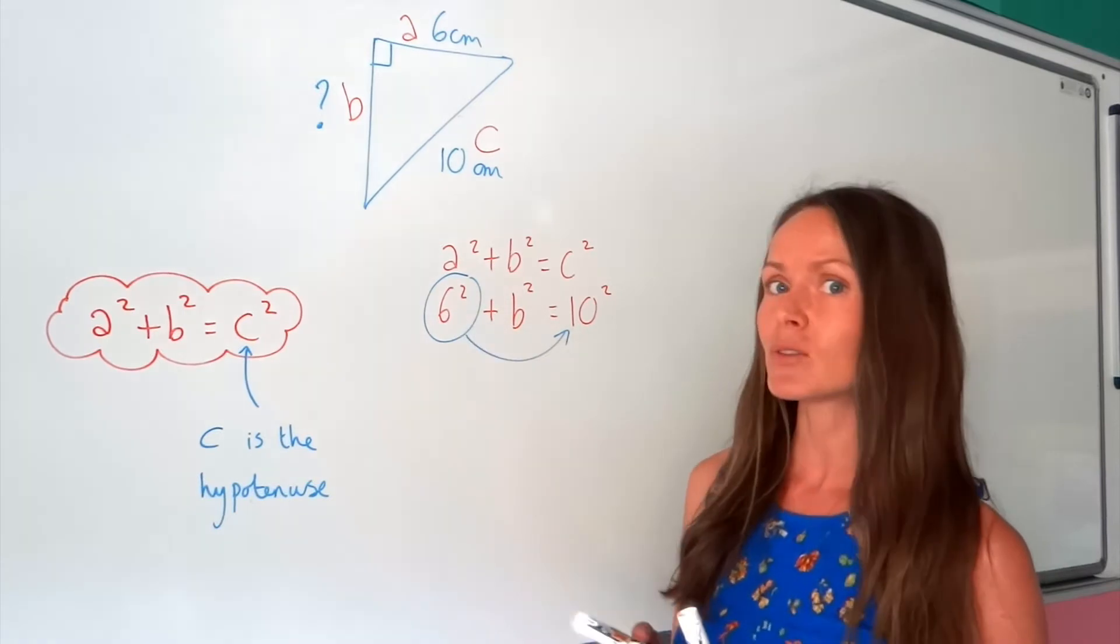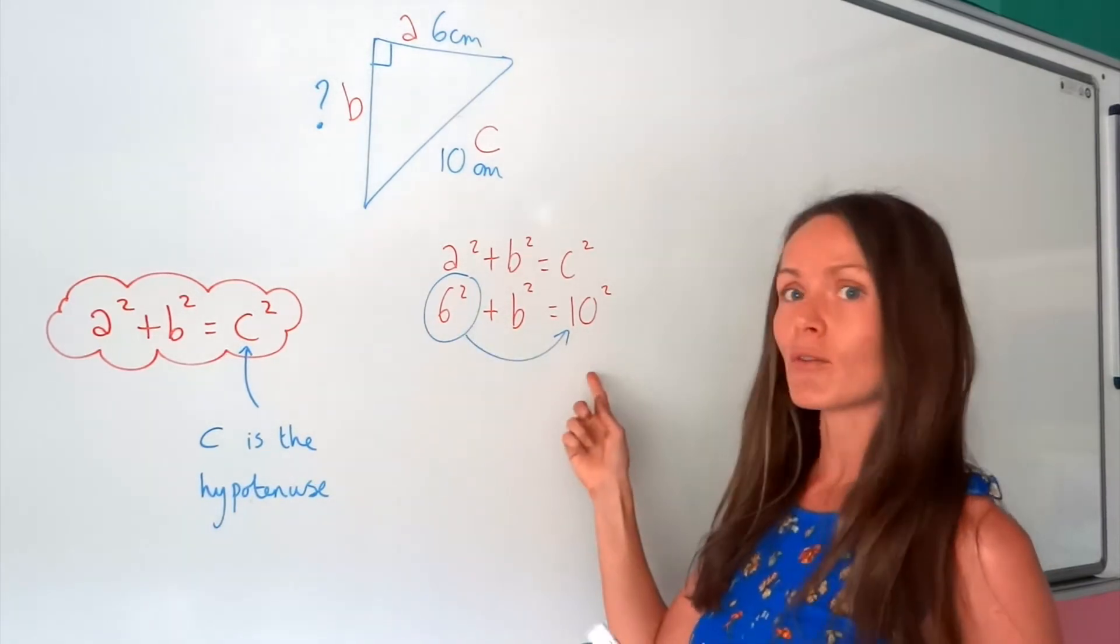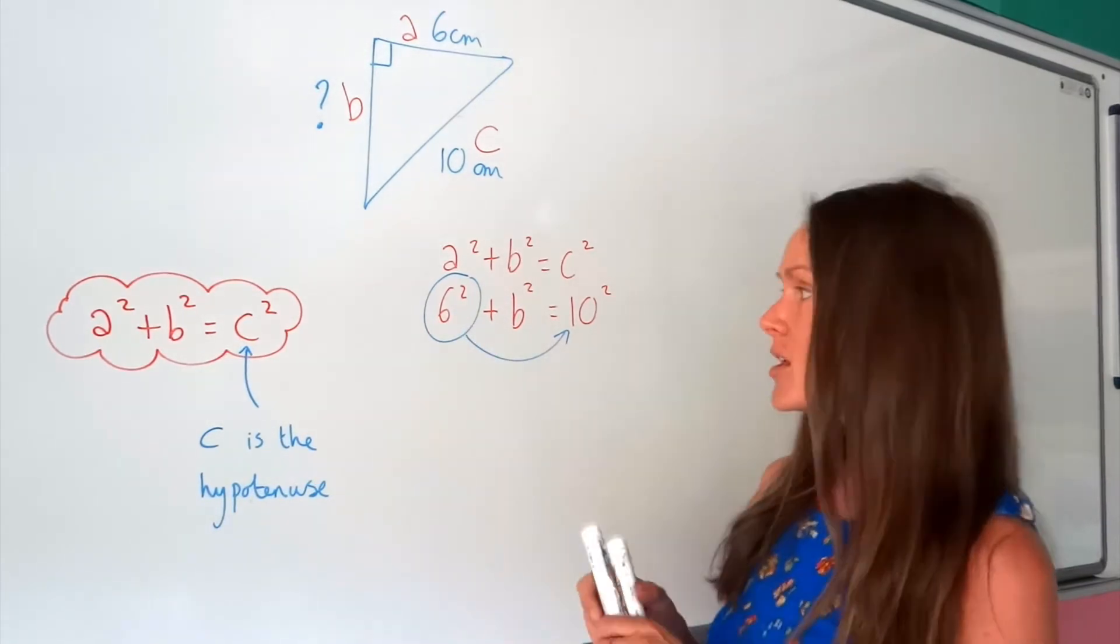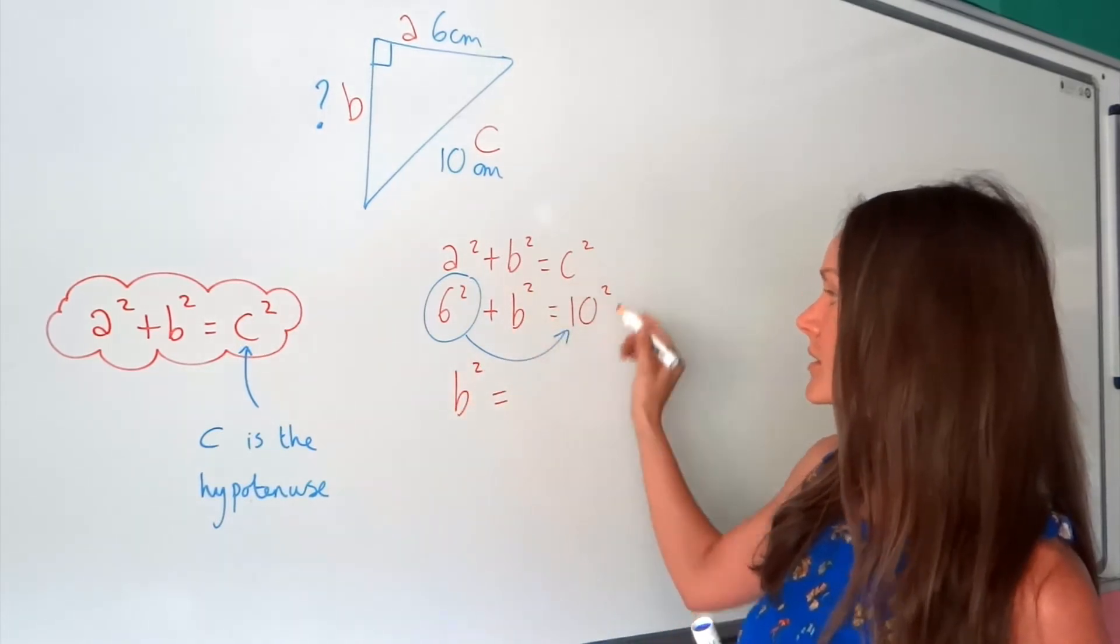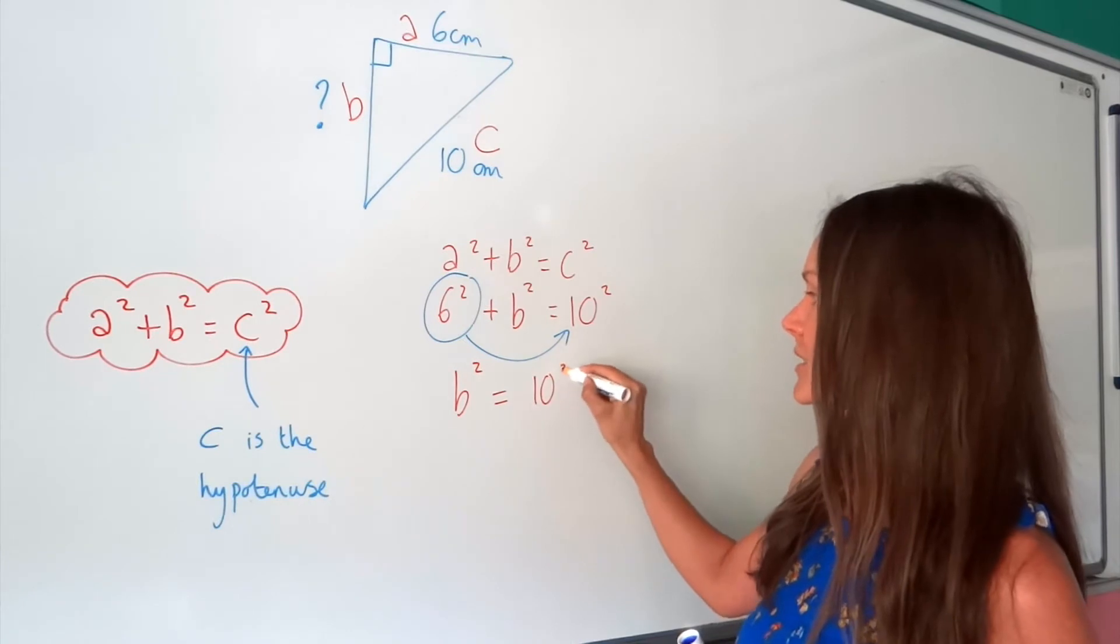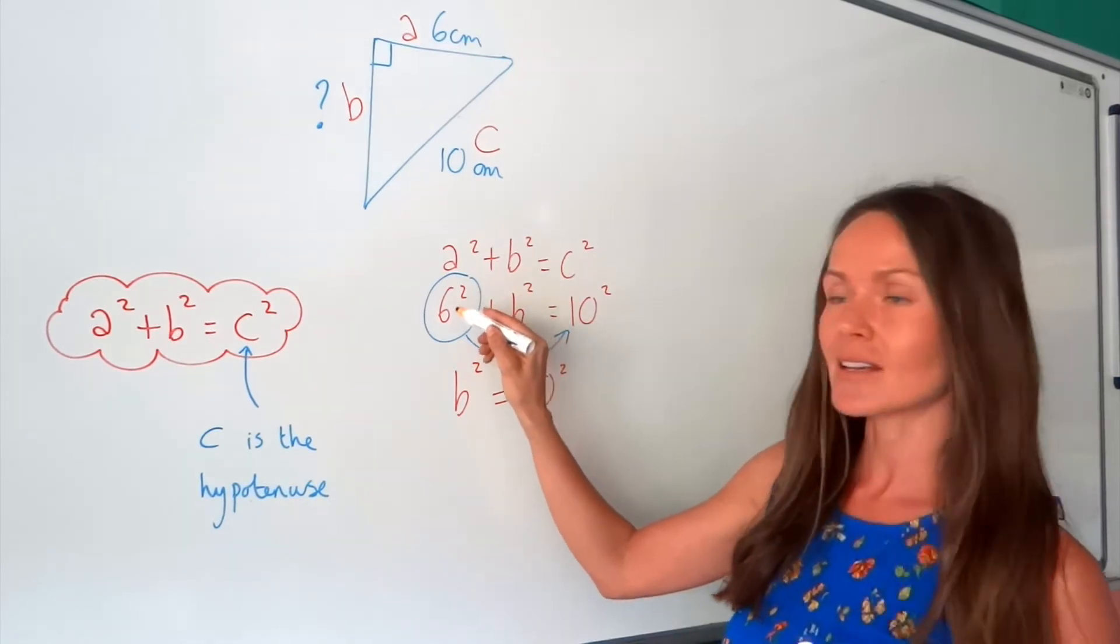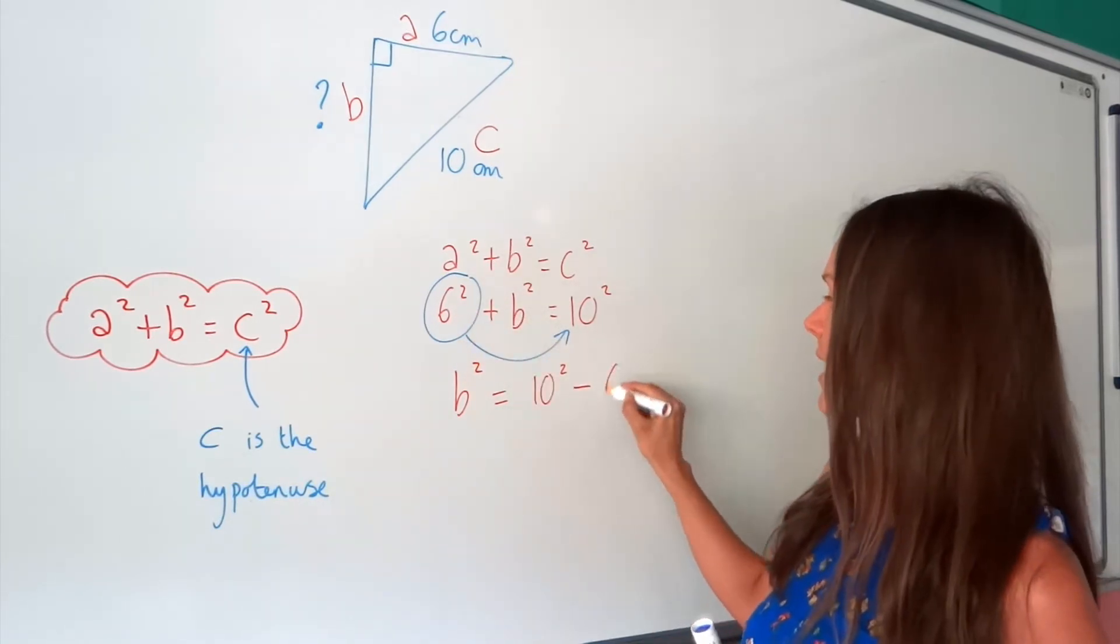So this used to be positive 6 squared, and when it goes over there, it's going to change to a negative. So I'm left with B squared, because that didn't go anywhere. The 10 squared is still the same, because that didn't move either. But this 6 squared changes to a negative.